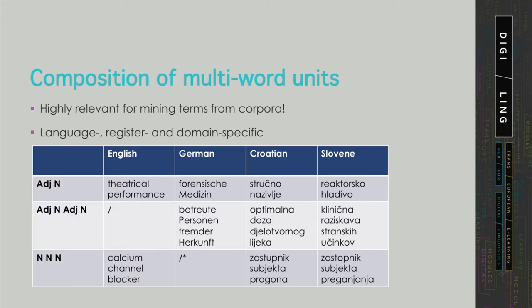In Slavic languages, the headword of a complex noun phrase will always be the first noun, whereas in English the headword is usually the last noun in the complex noun phrase.